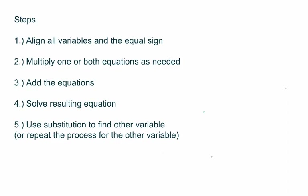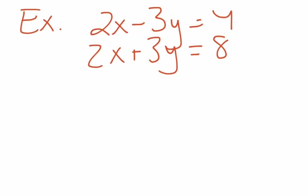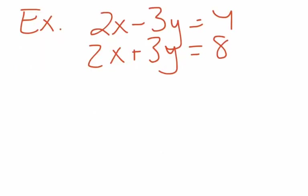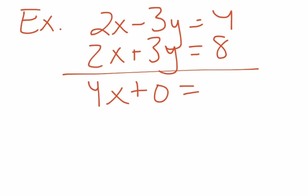This is ready-made; there is no other way you'd want to do this problem. So let's move on to adding the equations. Two X plus two X is four X, negative three Y plus three Y is zero, and four plus eight is twelve. You don't need to write the zero. You are welcome to just write four X equals twelve.